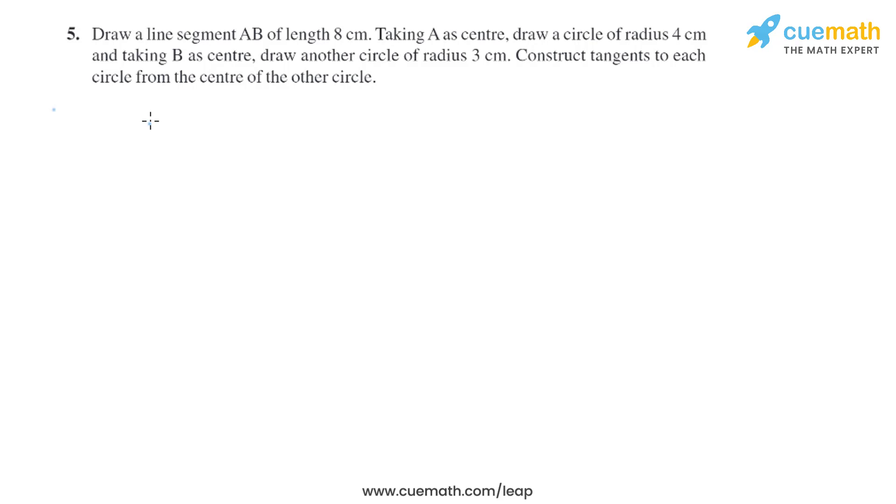Question 5 of this exercise says, draw a line segment AB of length 8 cm, taking A as center, draw a circle of radius 4 cm and taking B as center, draw another circle of radius 3 cm. Construct tangents to each circle from the center of the other circle.